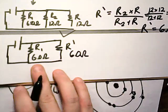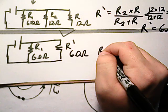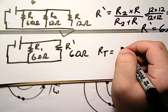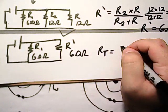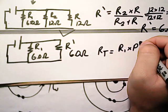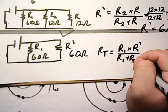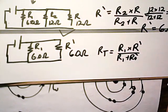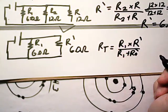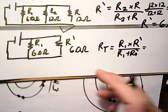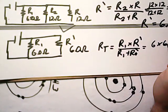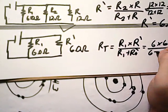Okay, and then for our last step we're going to combine these two. So our total R, our total is going to be equal to, again, R1 times R prime over R1 plus R prime. So 6 times 6 over 6 plus 6.